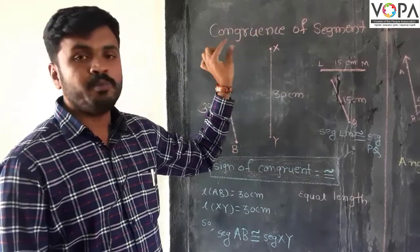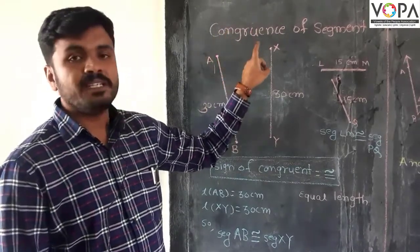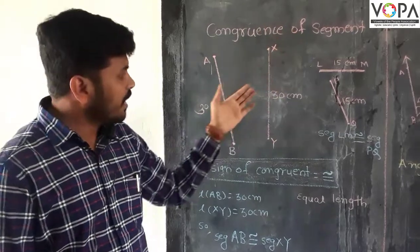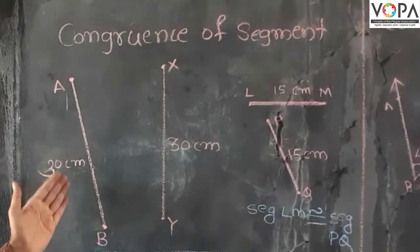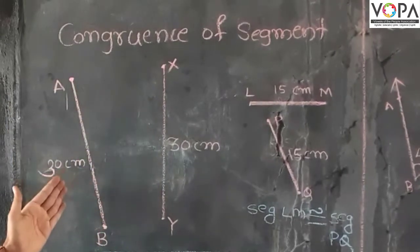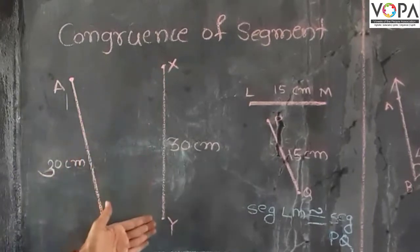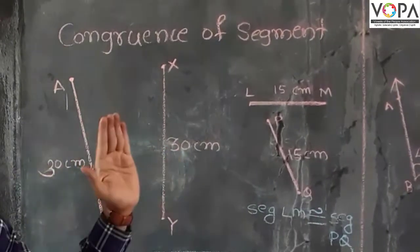Now see the figure. In the first figure there is one segment AB and XY, and the measurement of segment AB is 30 centimeters and measurement of XY is also 30 centimeters.